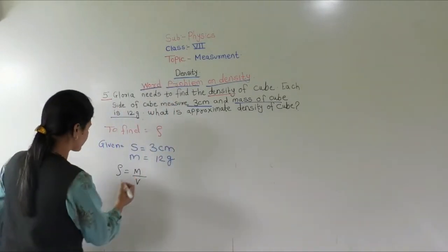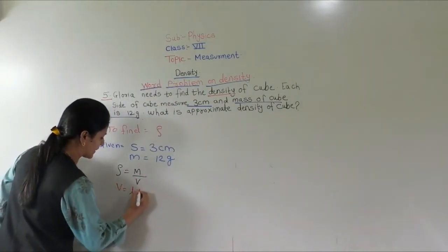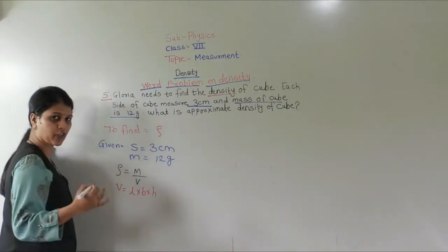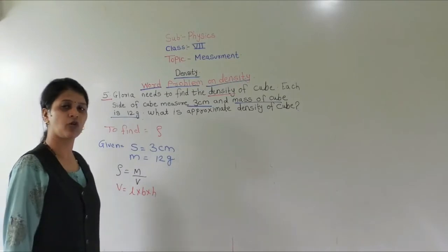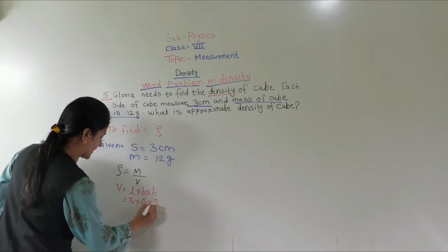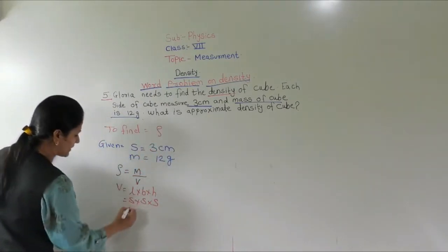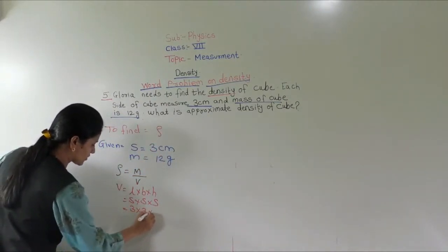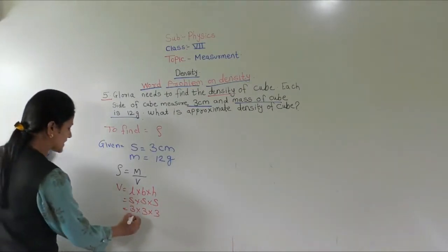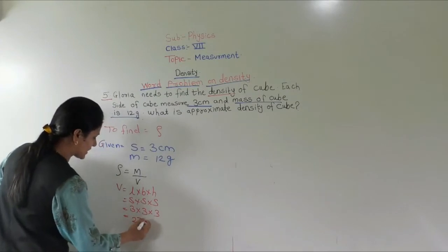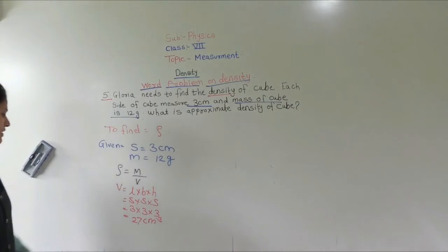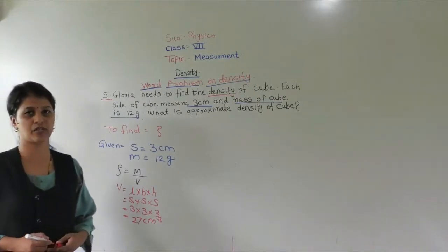How do we find the volume? Volume is length multiplied by length multiplied by height. For a cube, the volume is side × side × side. So it is 3 × 3 × 3: 3×3 = 9, and 9×3 = 27. The volume is 27 cm cube.